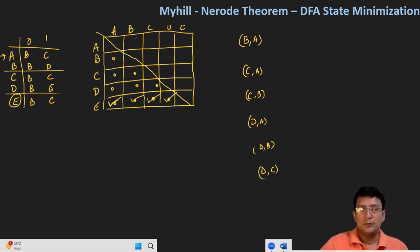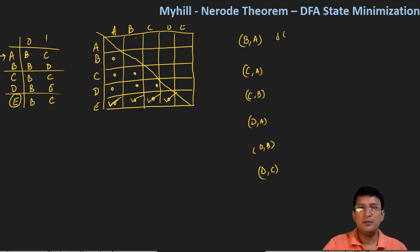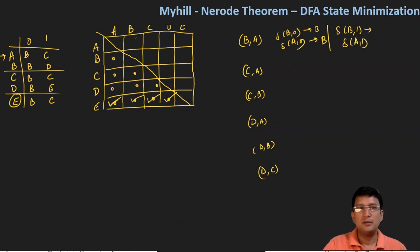For the BA pair, let's see the transitions. B on zero goes to B and A on zero also goes to B — same state, so they cannot make a distinguishable pair. Then B on one moves to D and A on one moves to C. The CD pair is not marked, so BA cannot be marked either.